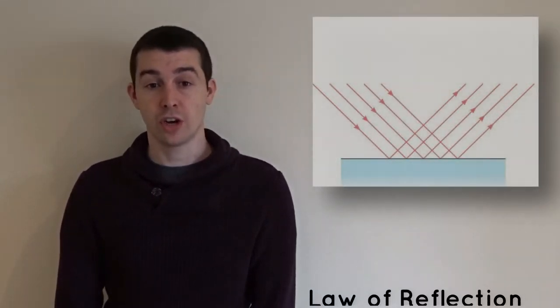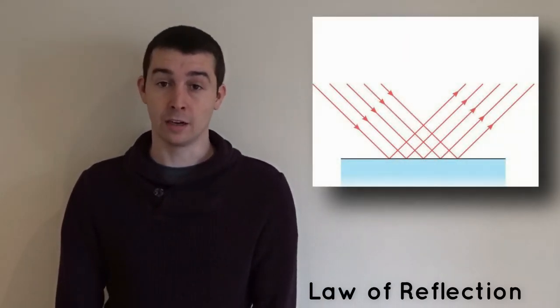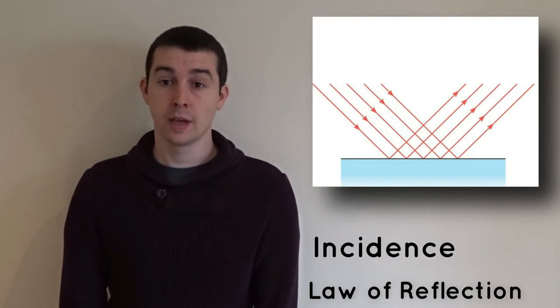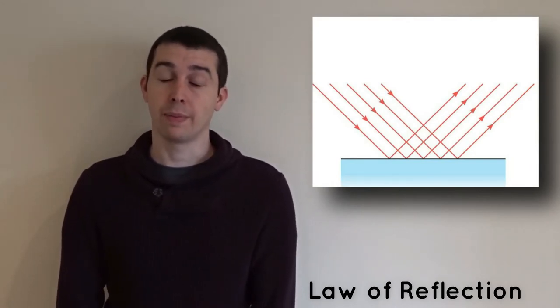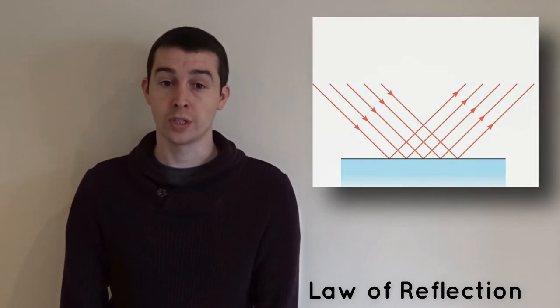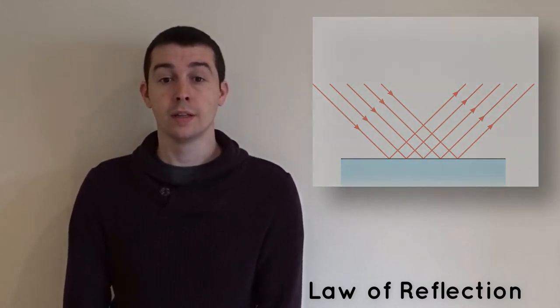When light rays strike a reflective surface, the angle at which they strike the surface, known as the angle of incidence, is the same as the angle at which they reflect back off of the object, known as the angle of reflection. This is known as the law of reflection.